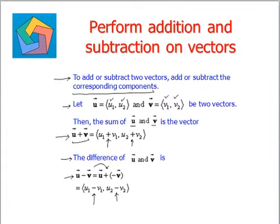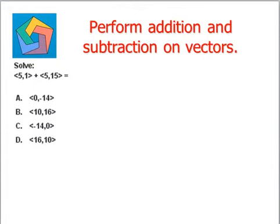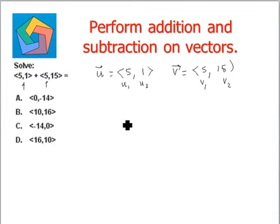Let's understand this with the help of the questions given to us. The first one says solve. We are given two vectors. Let's name them vector u equals 5 comma 1. So, let's use this u1 and u2. Vector v is given to us as 5 comma 15. This is our v1 and this is v2.